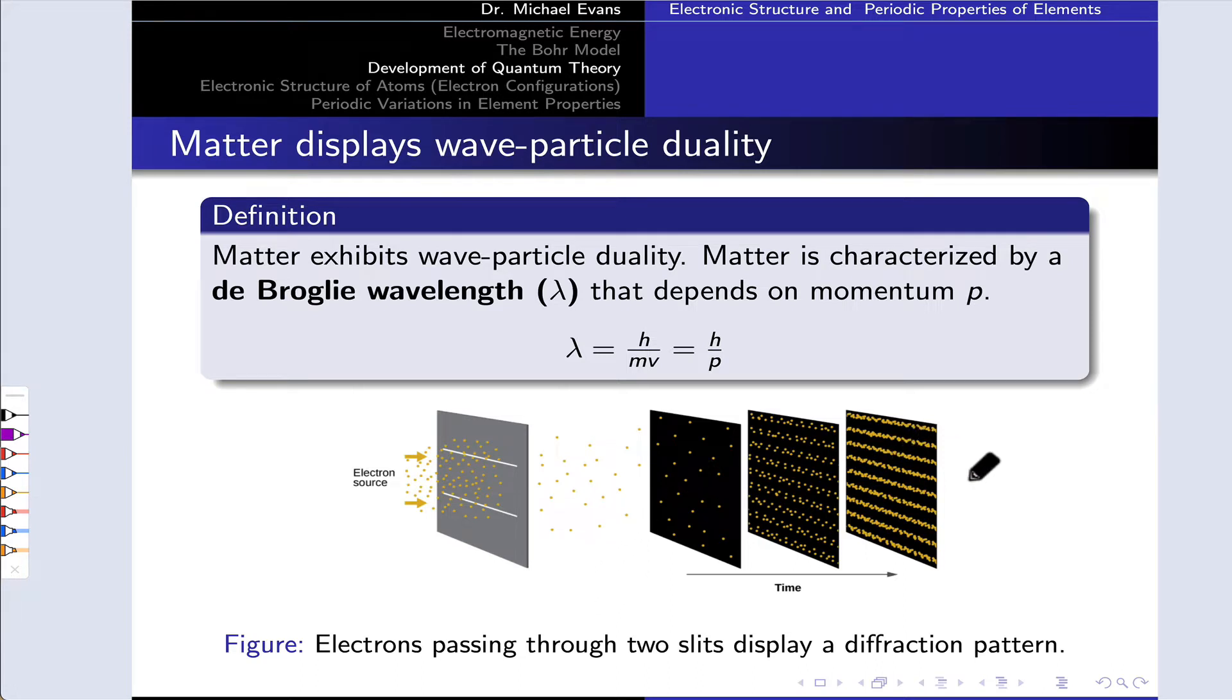But over time, what's observed is actually a wave-like pattern of electron positions on the detector, almost as if the electron is somehow diffracting, like the electron has wave-like behavior.